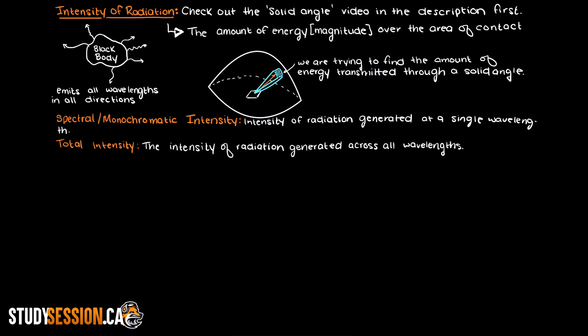In order to find the intensity of radiation, that is to say the energy per meter squared hitting a surface, we need the use of solid angles, which is why it was covered in the previous video.